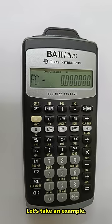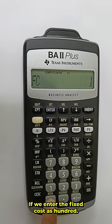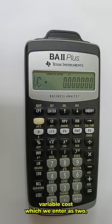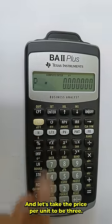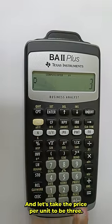Let's take an example. If we enter the fixed cost as 100, and this is the variable cost which we enter as 2, and let's take the price per unit to be 3.